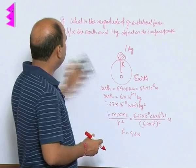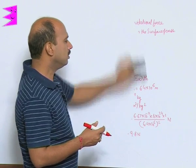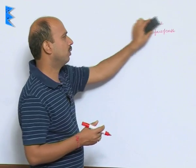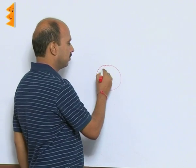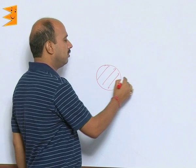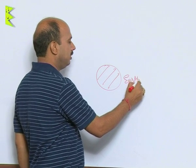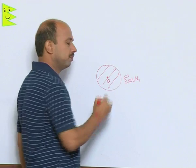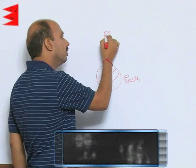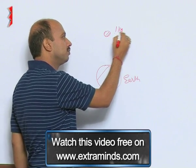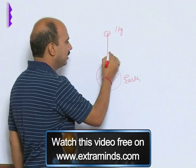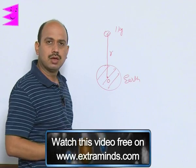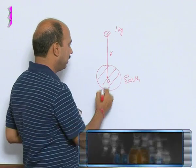Now, we can see another example or conceptual part. Suppose there is Earth. This is Earth, its center is here, this is O. If you place any object over here, this mass is 1 kg. Whatever is the distance, we do not know. We have written the distance R. If you calculate the force between them.